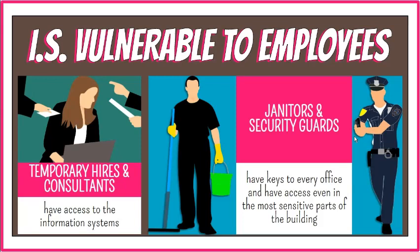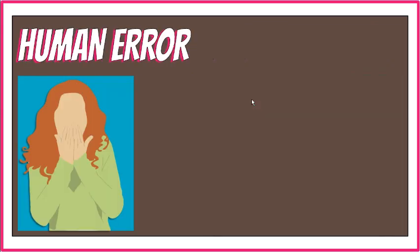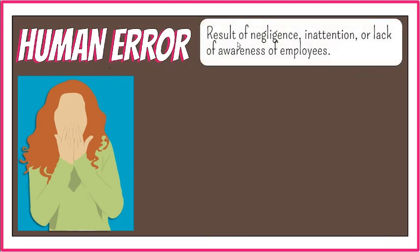Companies frequently outsource their security and janitorial services. They are usually present when other employees have gone home, they typically have keys to every office, and they can be found even in the most sensitive parts of the building. Human errors or mistakes by employees pose a large problem. These errors may be the result of negligence, inattention, or lack of awareness, which comes from poor education and training efforts by the organization.